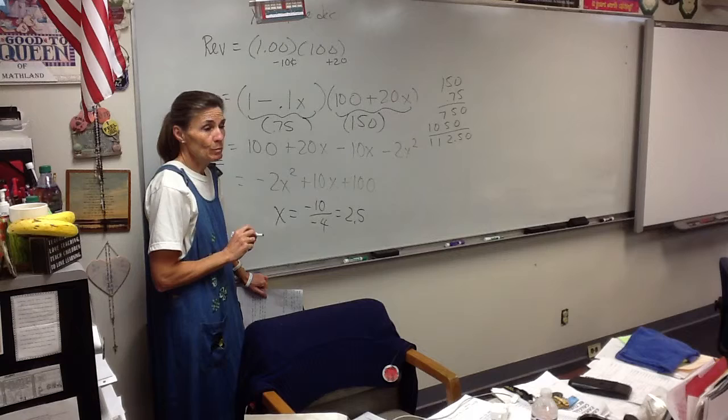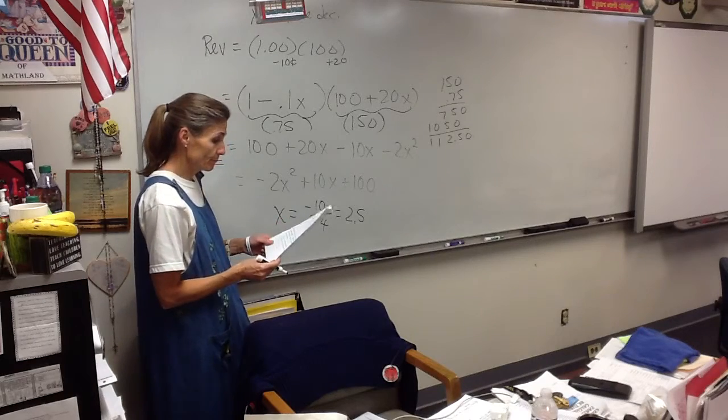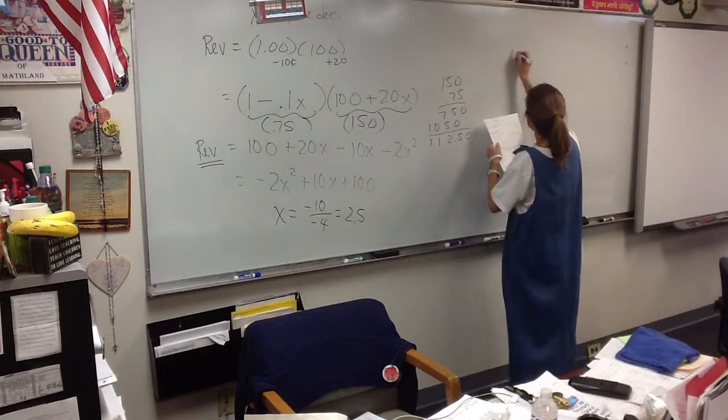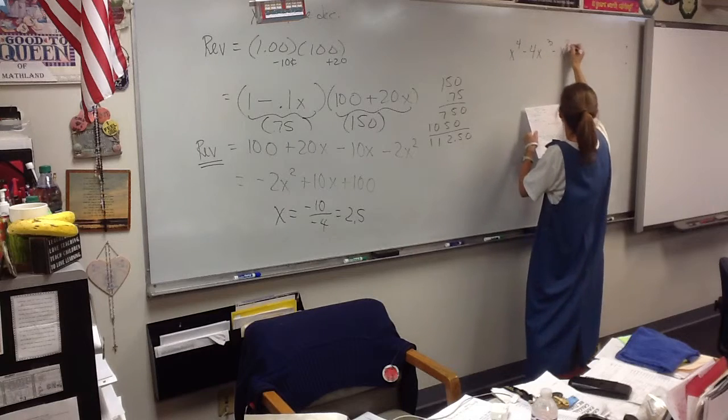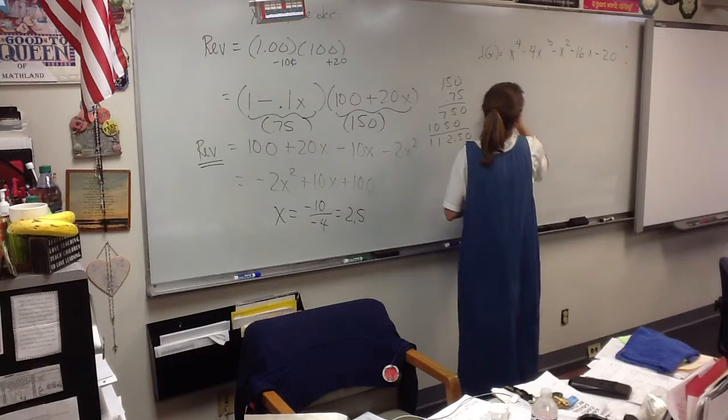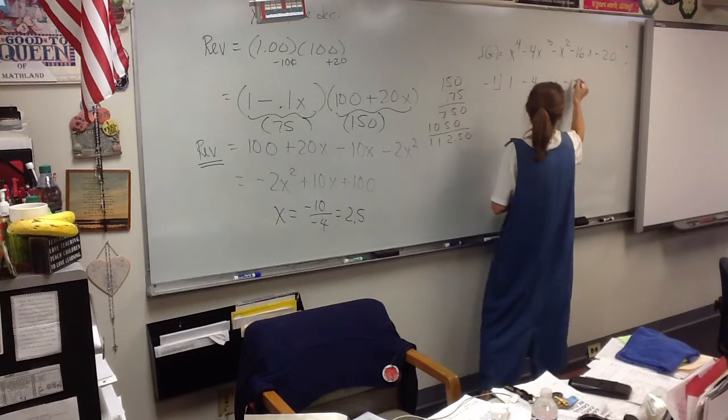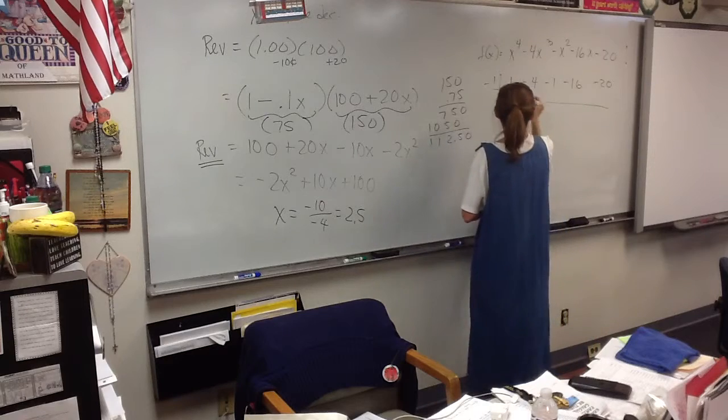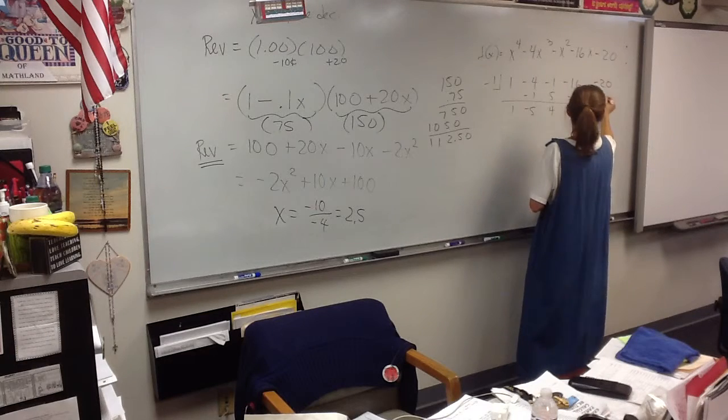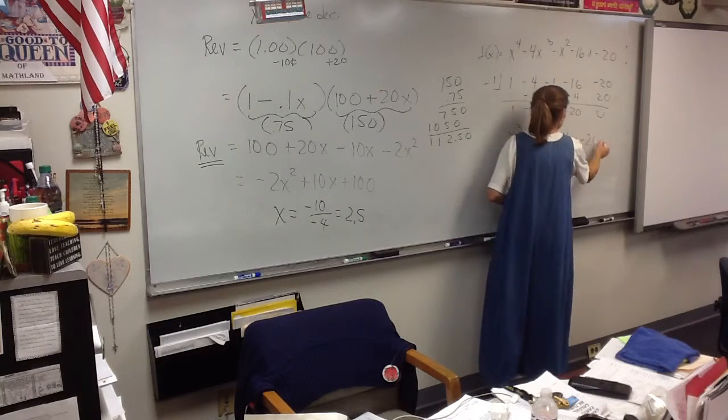Anything else from the quiz? Number two, find the zeros of this polynomial. So did you find any of them? Negative one is a zero. So I'll divide it out. I presume you did this also? And you were left with x cubed minus five x squared plus four x minus twenty?